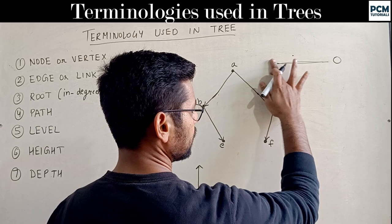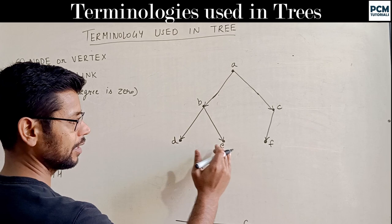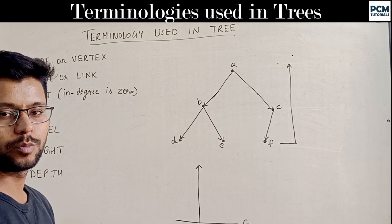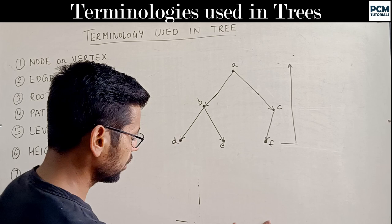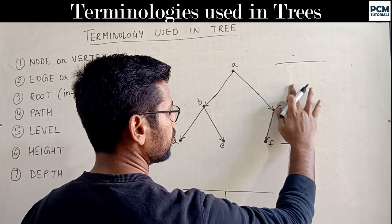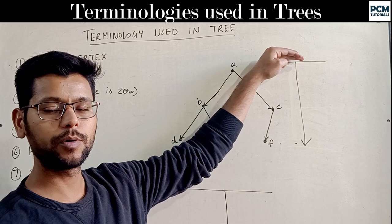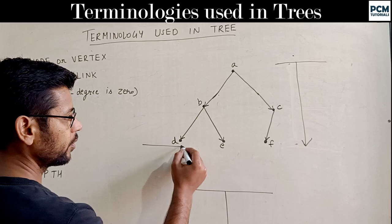Similarly, we call leaf nodes 'leaves.' Now regarding depth and height: depth is measured from the root downward — the depth of A is 0, the depth of B and C is 1, the depth of D, E, and F is 2. For height, we measure upward: 0, 1, 2.